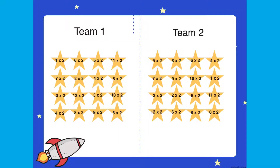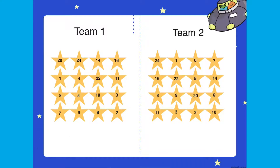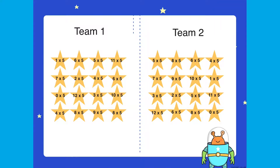This is because each board is split into two different sections: team 1 and team 2. Children answer the questions and then click on the star to reveal the correct answer.